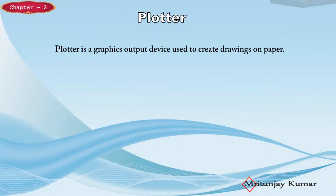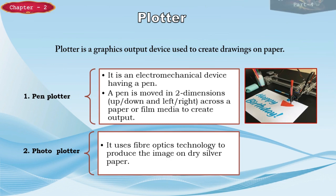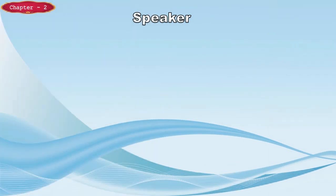A plotter is a graphics output device used to create drawings on paper. There are two types of plotter: a pen plotter and a photo plotter. A pen plotter is an electromechanical device with a pen that is moved in two dimensions — up/down and left/right — across a paper or film media to create output. A photo plotter uses fiber optics technology to produce the image on dry silver paper.